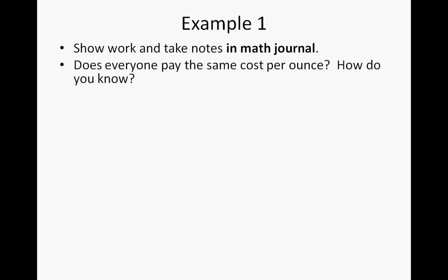Let's answer a couple of questions. Remember to either do two columns — one for your initial answer and the second column for any revisions or the correct answer — or you can do two rows, whichever way works best for you. So our first question: does everyone pay the same cost per ounce and how do you know? Pause the video, answer the question in your own words, and then continue the video to find out how close your answer is.